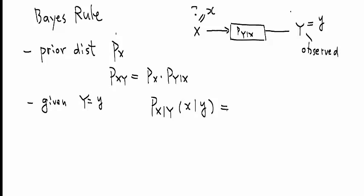And this, we can simply write out from the definition of conditional distribution is equal to the joint distribution divided by the marginal distribution of y.